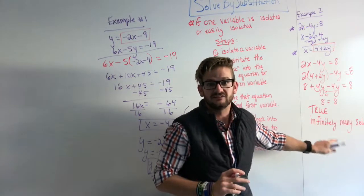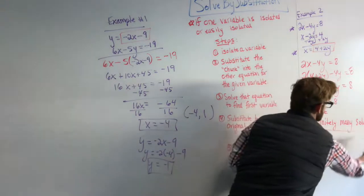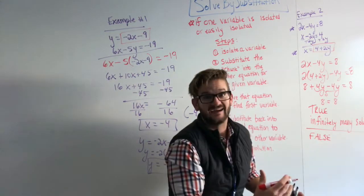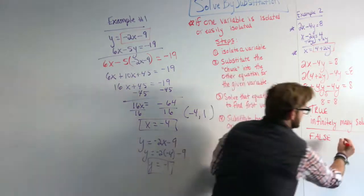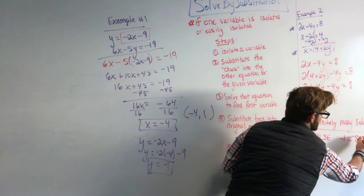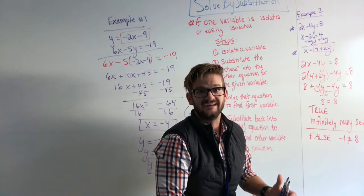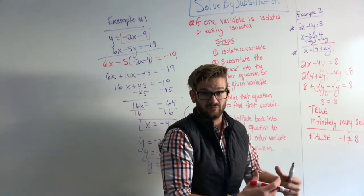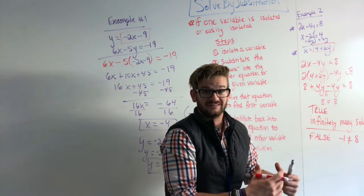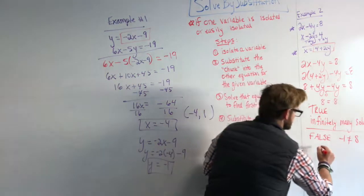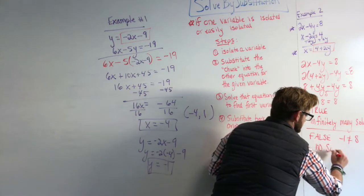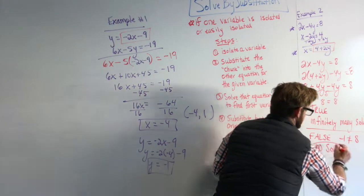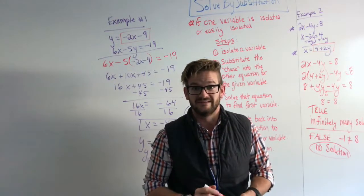If we got something that's false, if we followed the same process and we got something that's false, the variables canceled out and we're left with like negative 1 equals 8. Negative 1 will never equal 8. That would tell you no solution. That would tell you there's no two numbers that would work. It would also tell you that these lines are parallel. They have no shared points. So we would say no solution for that one. Infinitely many for the example that we did.